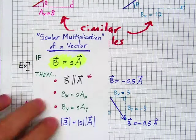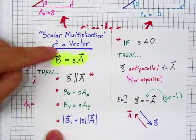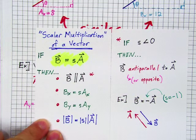So, in summary, we have these rules, or these results, when we multiply a vector by a scalar.